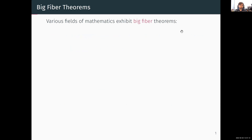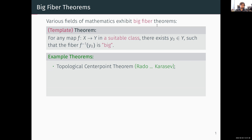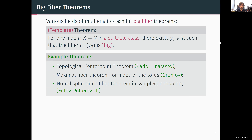In various fields of mathematics you encounter big fiber theorems, which are theorems of the following template: for any map in a suitable class of maps, there has to be some fiber which is considered big, where the notion of size depends on the context. Three examples I would like to discuss are: Karasov's topological center point theorem, which has a combinatorial-topological flavor; the maximal fiber theorem for maps of the torus due to Gromov, which is very algebraic-topological; and the non-displaceable fiber theorem in symplectic topology due to Entov and Polterovich.